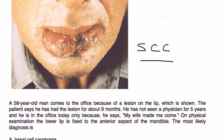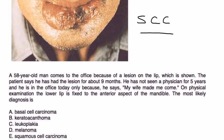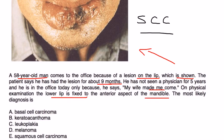There's a clinical vignette associated with this. A 58-year-old man comes to the office because of a lesion of the lip. The patient says he has had this lesion for about nine months. He has not seen a physician for five years, and is in the office today only because his wife made him come. On physical exam, the lower lip is fixed to the anterior aspect of the mandible. The most likely diagnosis is squamous cell carcinoma — a very characteristic presentation. The lip being fixed to surrounding tissues is also very characteristic. The answer is E. Basal cell carcinomas, the number one most common skin cancer, appear pearly, so I encourage you to look up pictures to differentiate between the two.